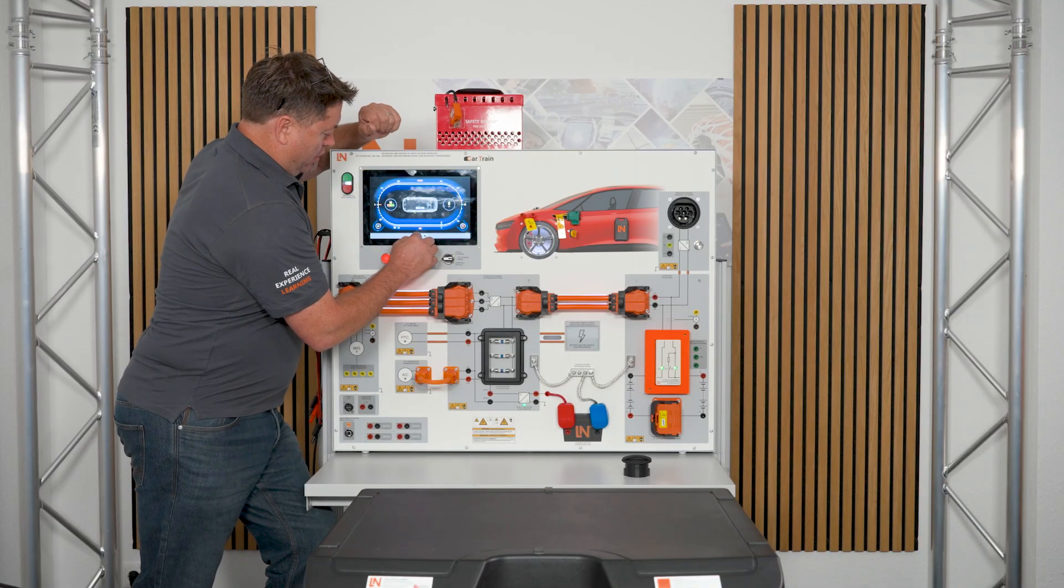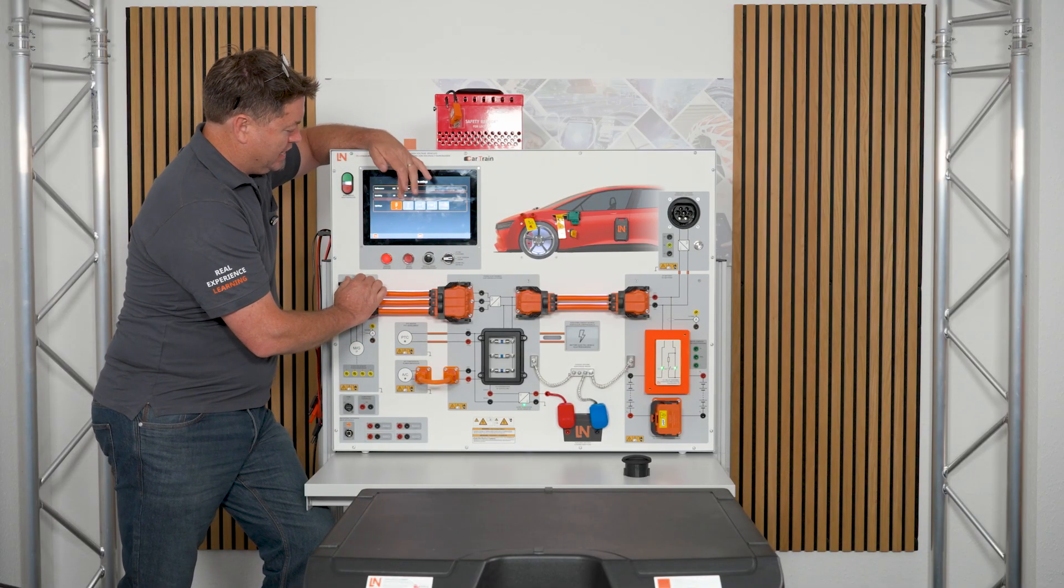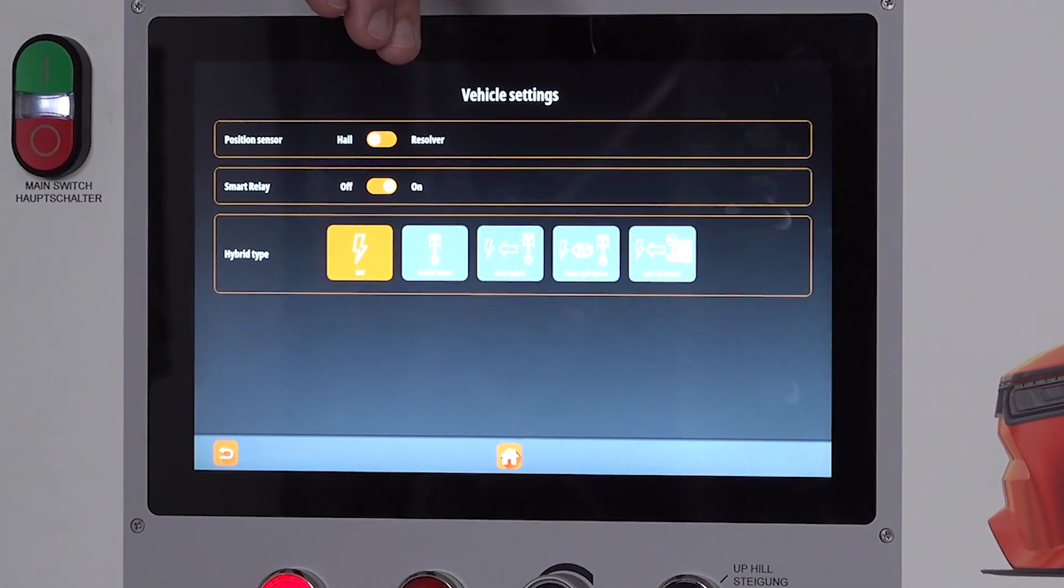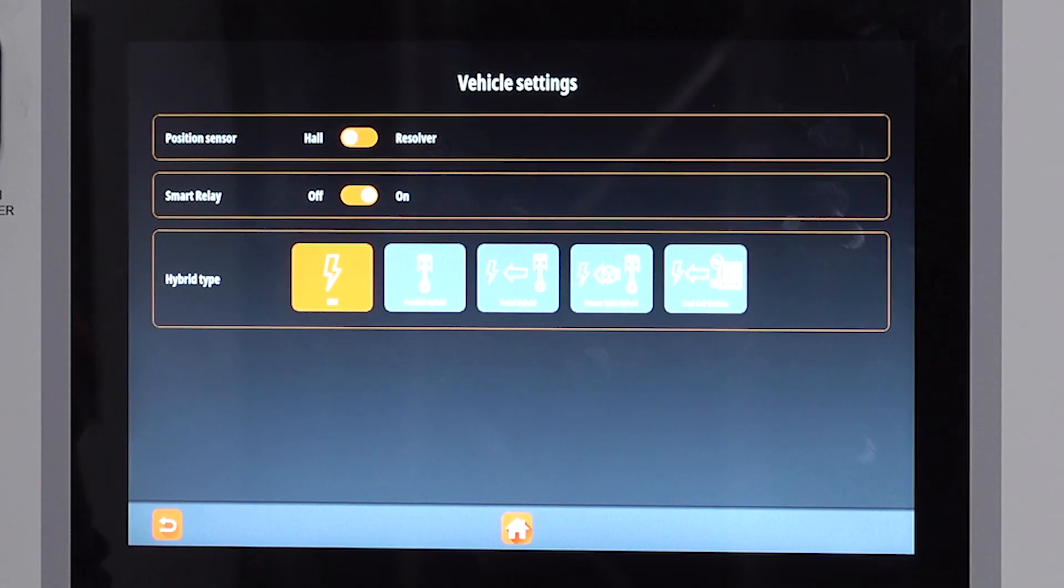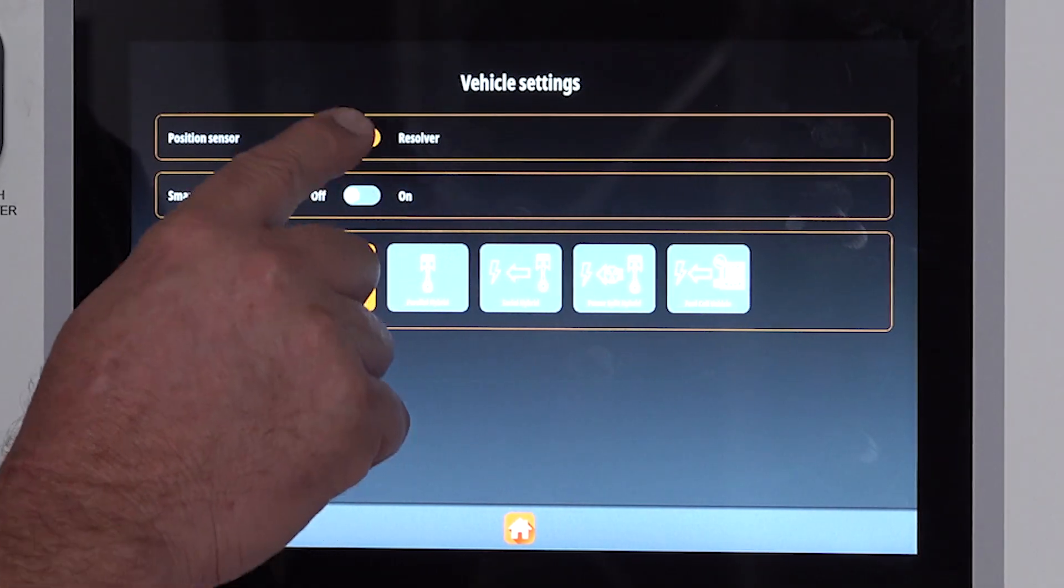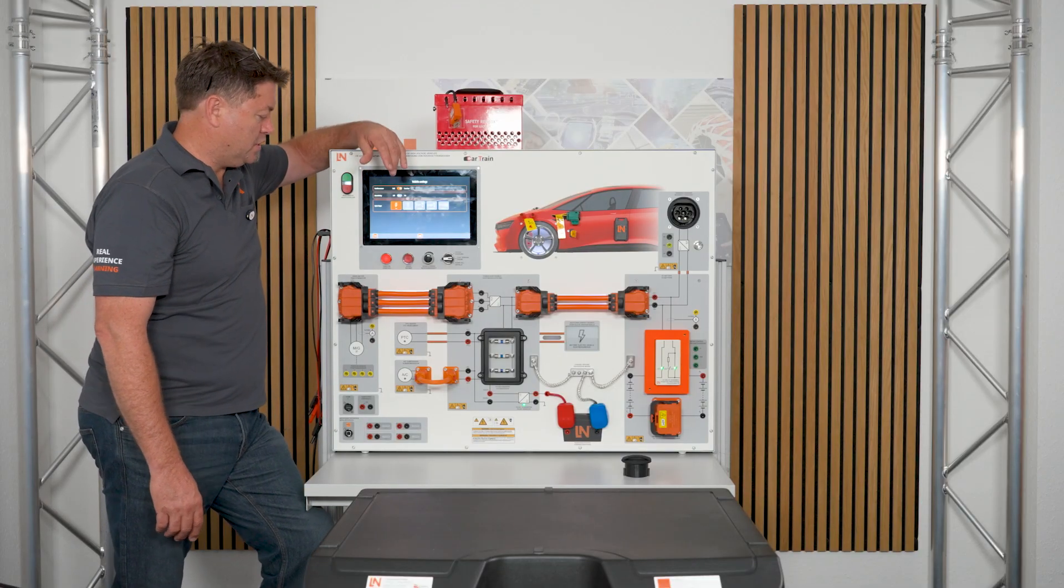If we have a look at the various modes within here, we can have the vehicle settings, so we can change the different types of vehicle that we see. If it's a hybrid vehicle or a fuel cell vehicle, we can switch on smart relays, switch them on or off. We can switch between a hall sensor or resolver under the vehicle settings.